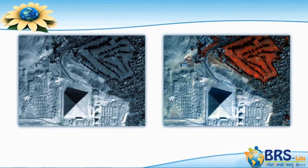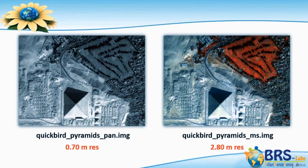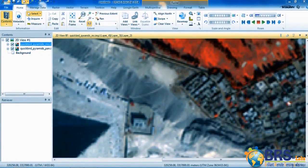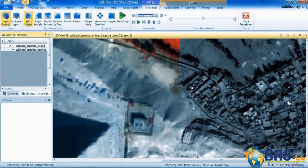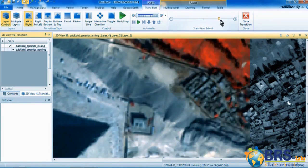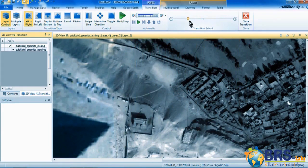Now we will apply this process on two images for the same area. The first image, QuickBirdPyramidsPan.img, is a panchromatic image with high spatial resolution of 0.7 meters. The second image, QuickBirdPyramids.img, is a colored image with medium spatial resolution of 2.8 meters. We open both images in one viewer, then click on Swipe so you can see the difference in spatial resolution. The colored image with medium resolution is on top, and below it is the panchromatic image with high resolution that shows features clearly.